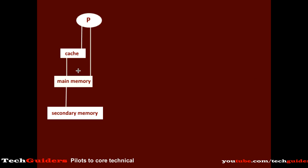If the searched word is found at a particular level, then it is called a hit at that level. If not found, then it is called a miss at that level. If found in cache then it is a cache hit; if not found then it is a cache miss. If found in main memory then it is a page hit, and if not found then it is a page miss.